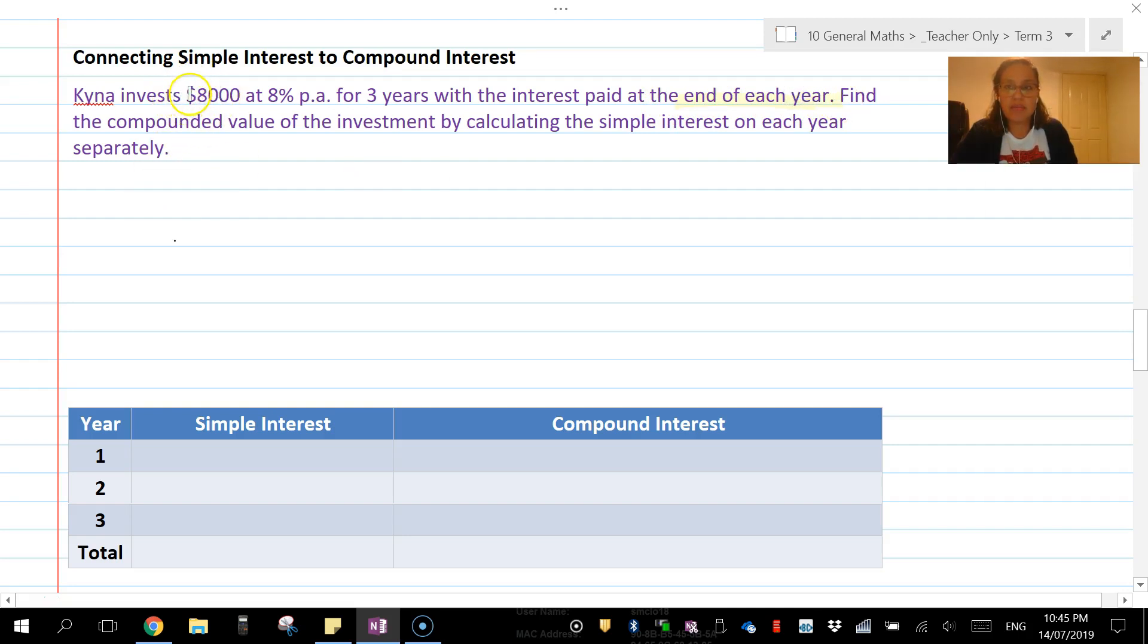We invest $8,000, so language like that - 'invest' - means that we know that's going to be the principal. 8% per annum tells us it's an interest rate, and three years in length.